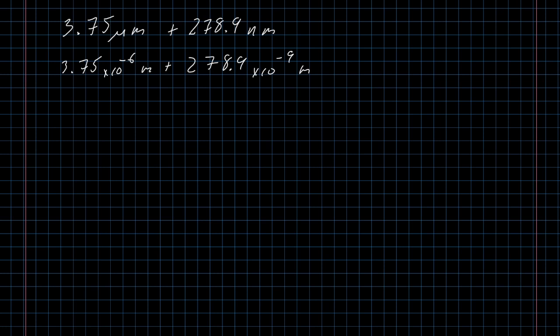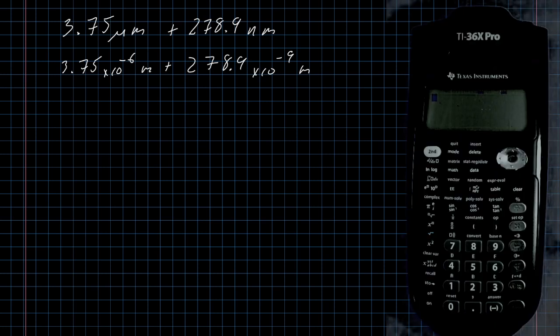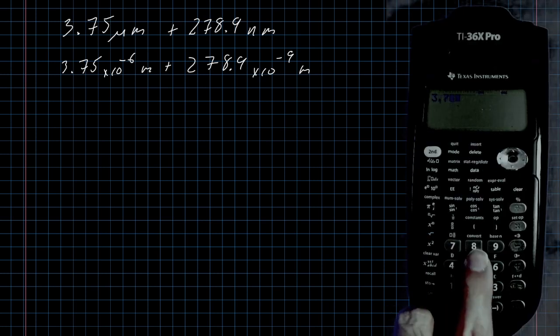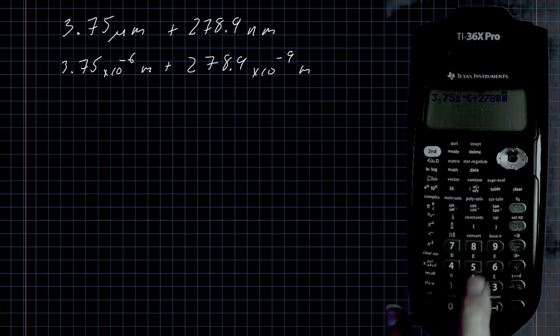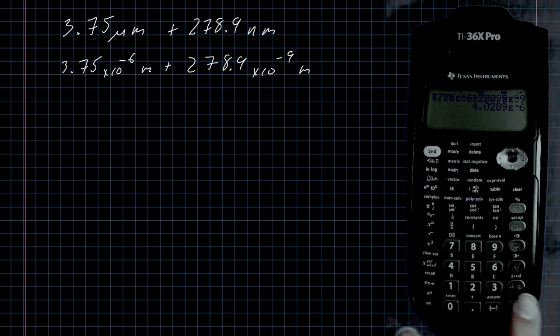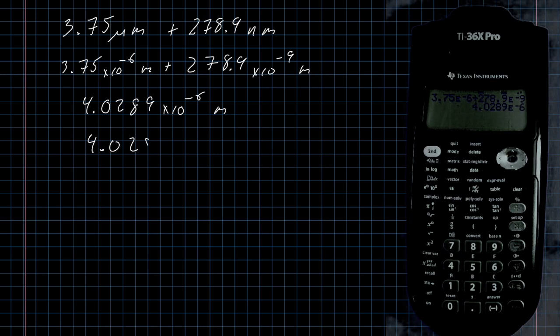And since my calculator is in engineering notation, if I go ahead and I type this expression in, 3.75 times 10 to the negative 6, plus 278.9 times 10 to the negative 9, my calculator will keep things in engineering notation for us. And it will tell me that the solution here is 4.0289 times 10 to the negative 6. Units will still be in meters, and 10 to the negative 6 is micrometers.